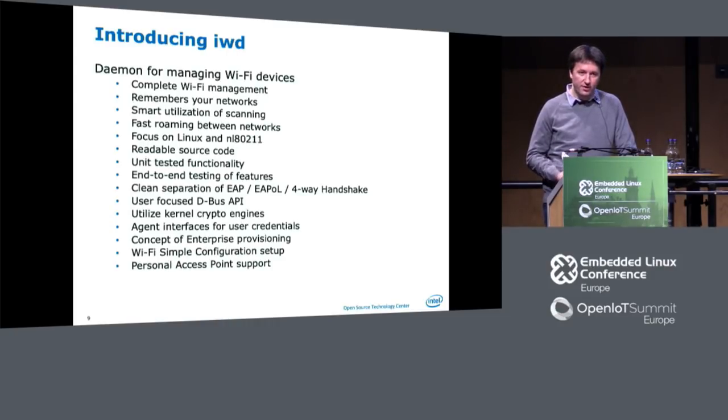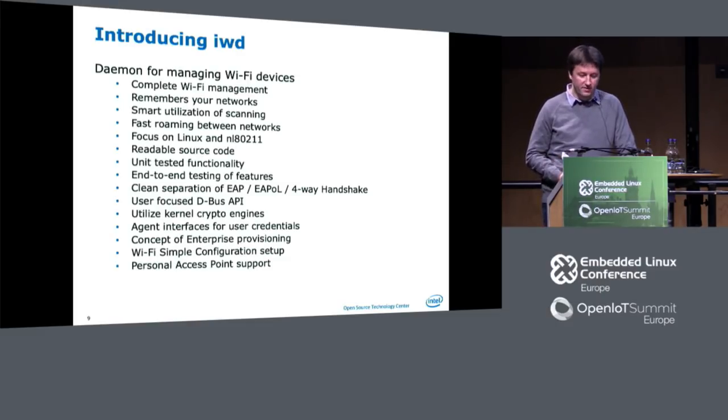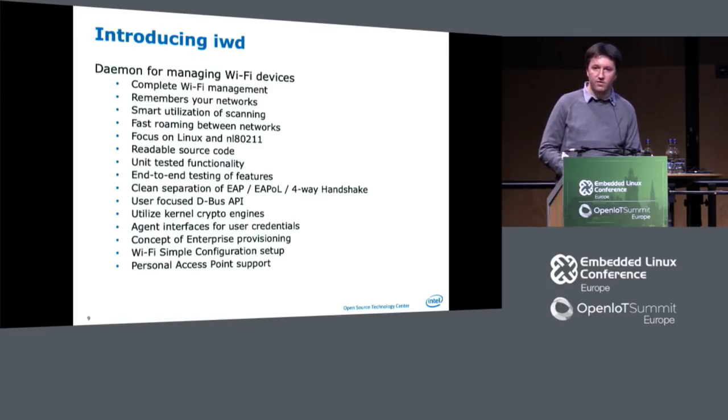We wanted to make the code readable so we can actually audit it. wpa_supplicant is not readable code — before you find the entities that actually do something, you've jumped through six layers of indirection. Either clean it up or live with this mess forever, with only two people in the world who probably know that code. With readable code, you separate things into small blocks — beacon processing in a separate module, with unit tests to ensure it keeps doing the right thing. You can also add nice end-to-end testing in a simulator to ensure authentication still works. For security, we separated EAP, EAP over LAN, and the four-way handshake so they can be reused and utilized properly.